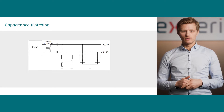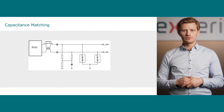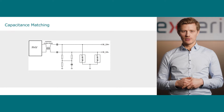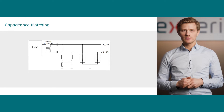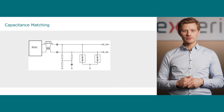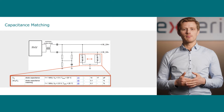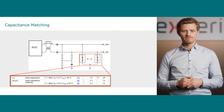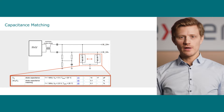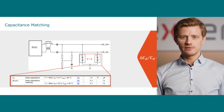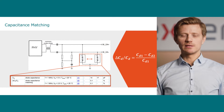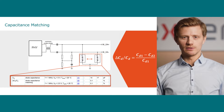In our previous video, we learned that during normal operation, each ESD device can be approximated by a capacitance. Due to device tolerances, the capacitances in both ESD devices can slightly deviate.